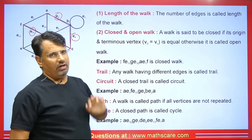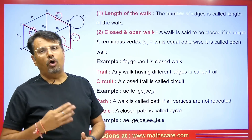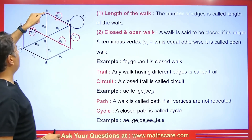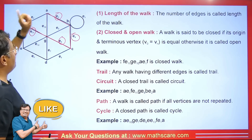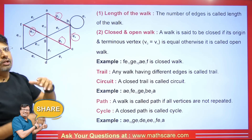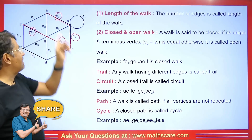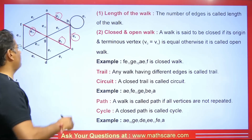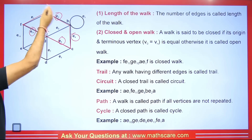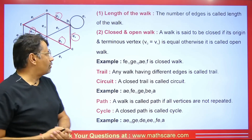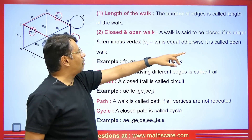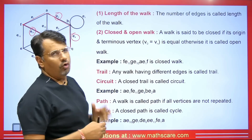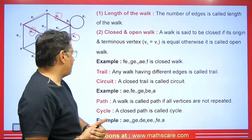Now let's see what is a closed walk and what is an open walk. If a walk starts from a vertex and ends at a different vertex, it is called an open walk. But if it starts and ends at the same vertex, it is called a closed walk. Formally: a walk is said to be closed if its origin and terminus vertex are equal; otherwise it is called an open walk.